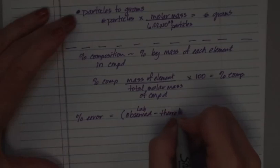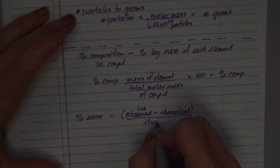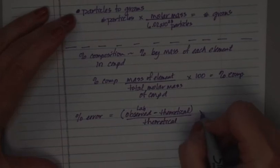Close parentheses, all divided again by the theoretical, what it's supposed to be in a perfect world. And since it's a percent, it's times 100. That's your percent error. Okay? So now what we're going to do is we're going to practice on these.